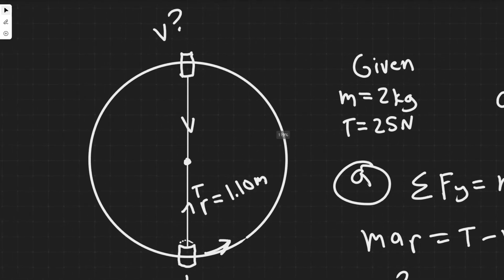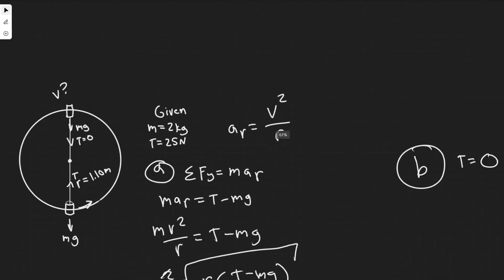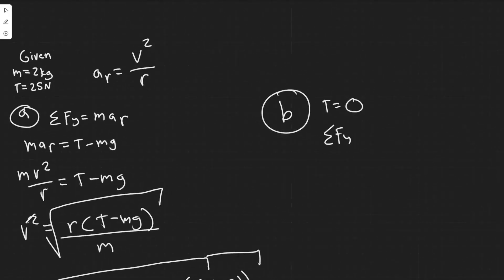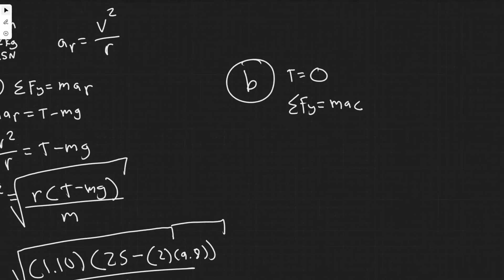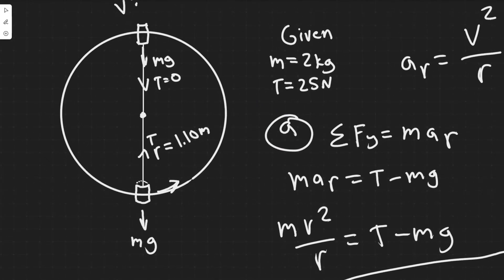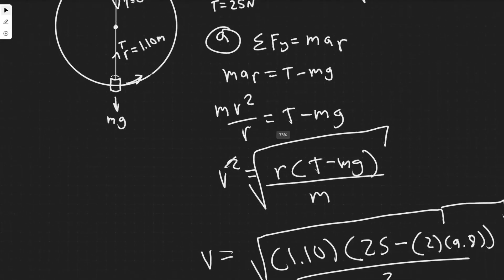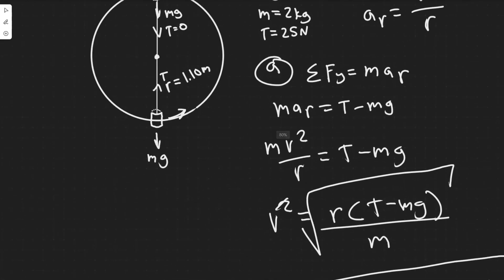So we're going to say T equals zero for this one, and basically everything is going to be the same. In this case, if T is zero, the only force we have acting here is mg straight down. When we sum the forces in y, it equals m*a_c because it's moving in a circle. But in this case, all we have is mg equals m*a_c. mg is going to be positive here because it's pointing into the circle.